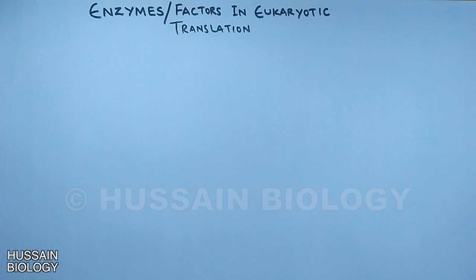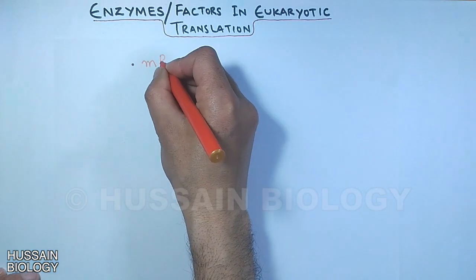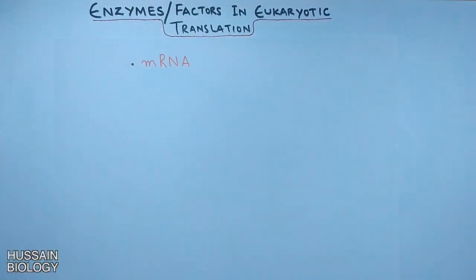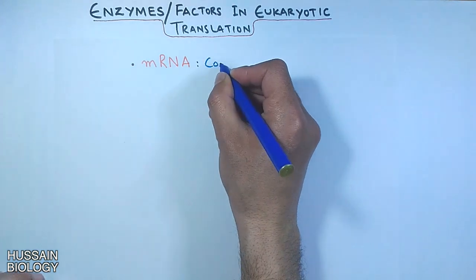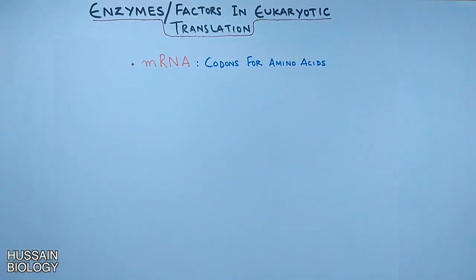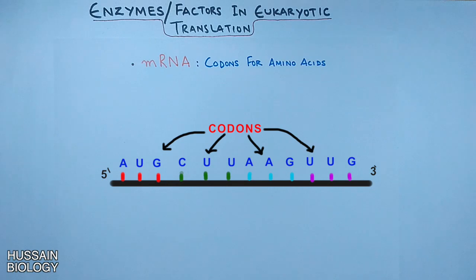First we have the mRNA molecule that provides basic information in the form of codons which code for amino acids. Here in this diagram we see the triplet nucleotide as a codon on the mRNA molecule.